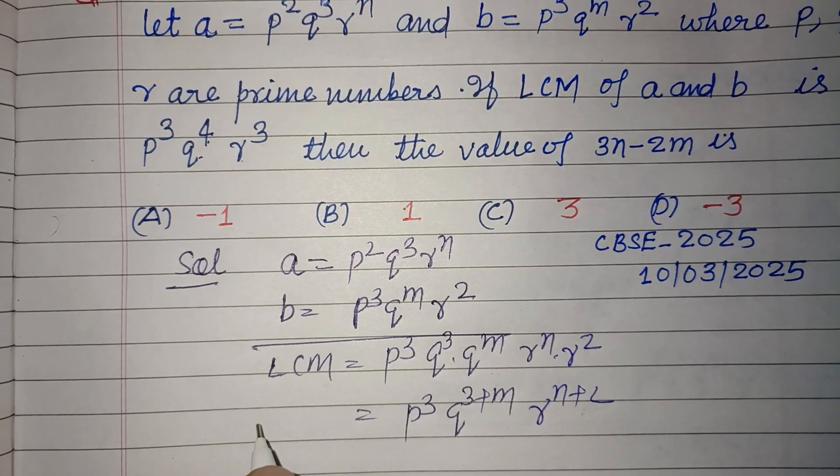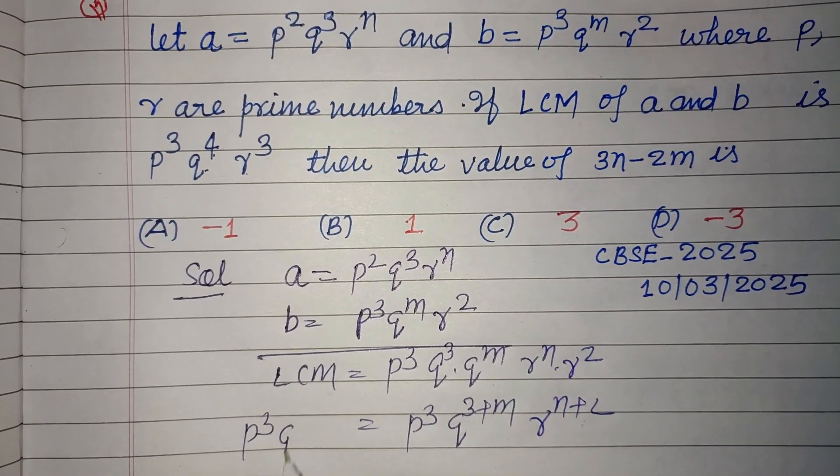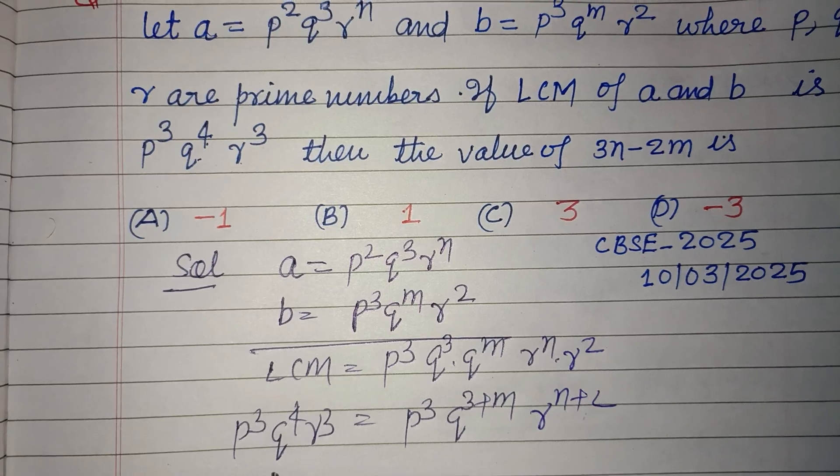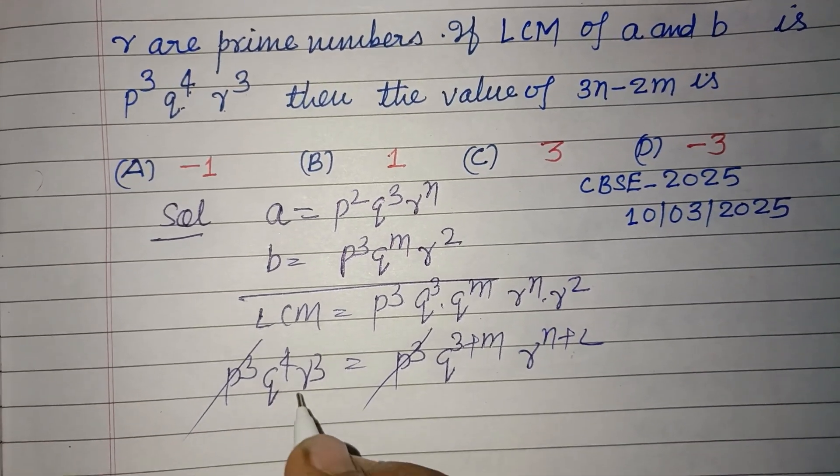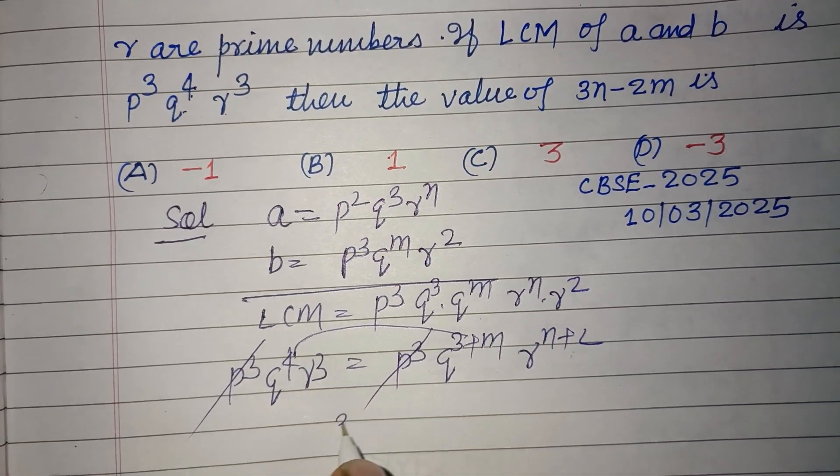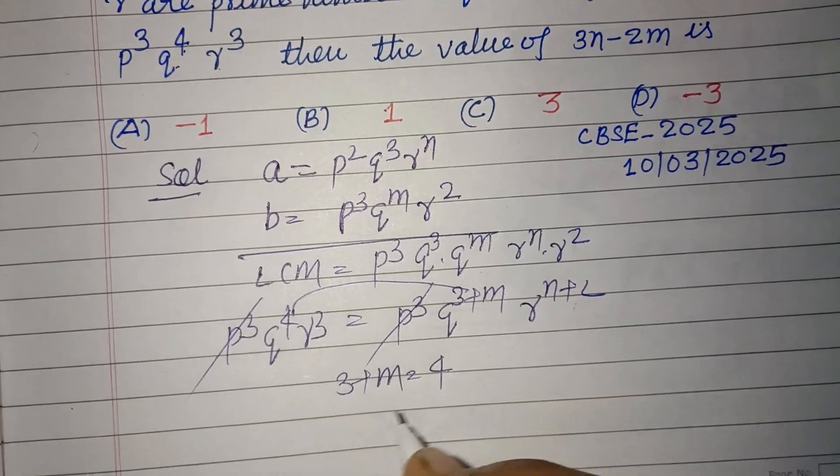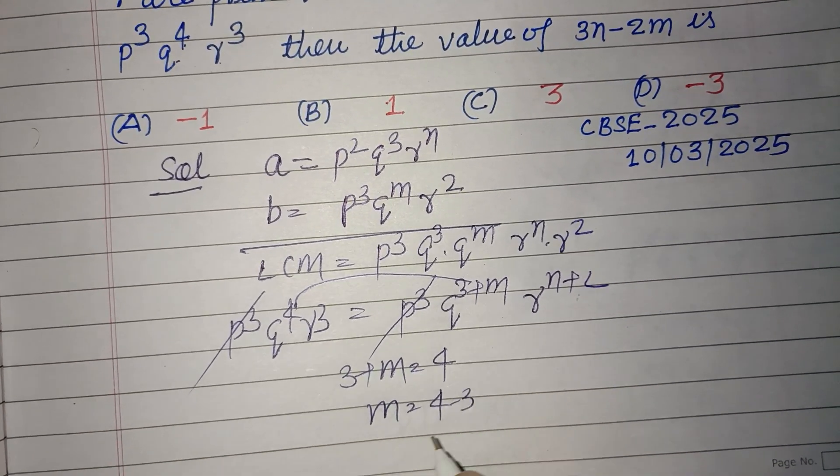And it is given to us P cubed Q to the power 4 R cubed. Now comparing that, 3 plus m equal to 4, m equal to 4 minus 3, that is 1.